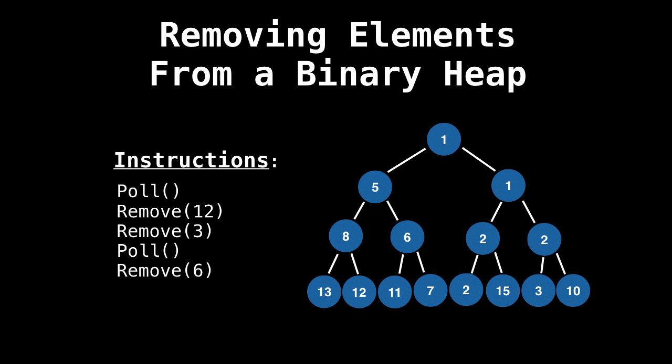In general, with heaps, we always want to remove the root value because it's the node of interest. It's the one with the highest priority because it's the smallest or the largest value. When we remove the root, we call it polling. A special thing about removing the root is that we don't need to search for its index, because in an array implementation it has position or index zero.